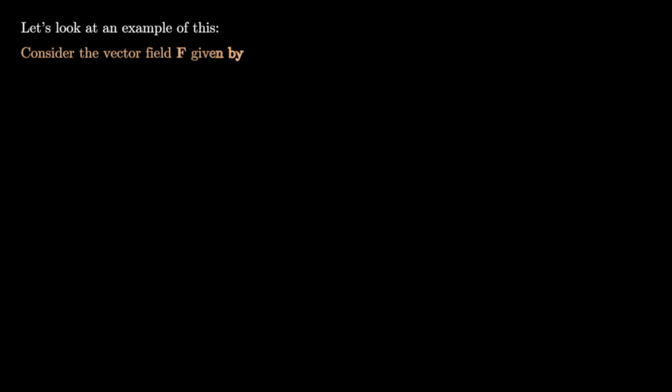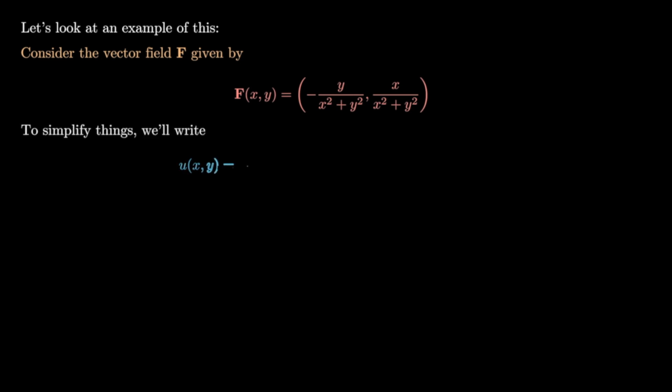Let's look at an example. Consider the vector field f given by f(x,y) = (-y/(x²+y²), x/(x²+y²)). To simplify, we write u(x,y) for the first component, namely u(x,y) = -y/(x²+y²), and v(x,y) for the j component, namely v(x,y) = x/(x²+y²).